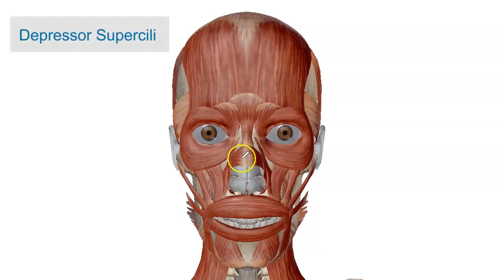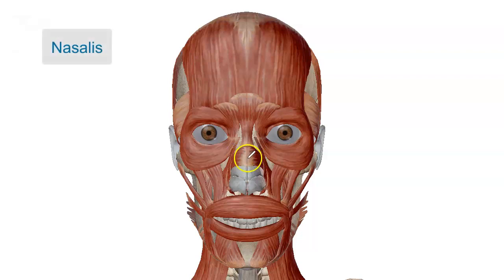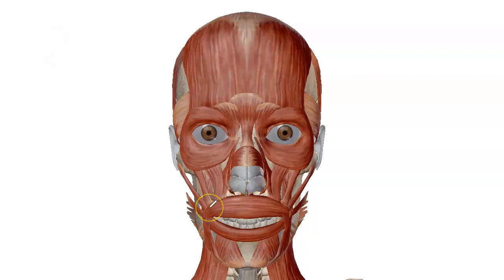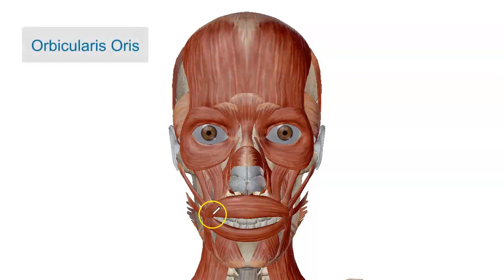Inferior to that we have a muscle covering the nose called the nasalis muscle, and inferior to that a muscle orbiting the mouth called the orbicularis oris. Remember, another name for the mouth is the oral region, so we just add '-is' at the end to make it the oris muscle — so completely it's called the orbicularis oris, orbiting the mouth.